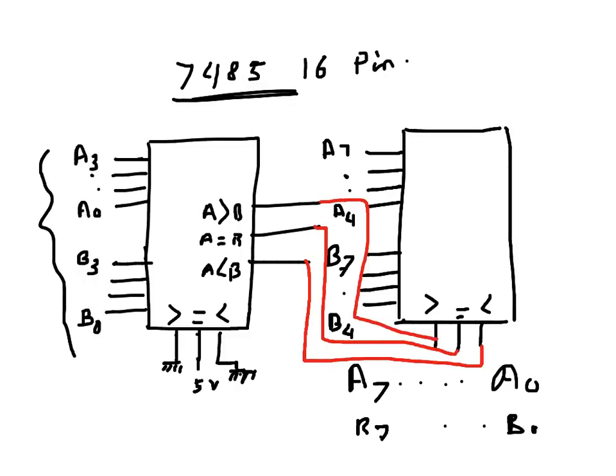So for the least significant one, they were grounded and connected to five volts, but for the higher significant bits, the output of the lower significant one goes to the input of the higher significant box. And this will be the final output. So this is A greater than B, this is A equals to B, and this is A less than B.